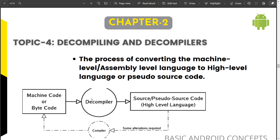Coming to the first point: what is decompiling? It is the process of converting machine-level language or assembly-level language into a high-level language or source code. Whenever you compile Android code, it will be converted into DEX classes, as we saw in earlier videos when we unpacked the APK and saw the DEX file.